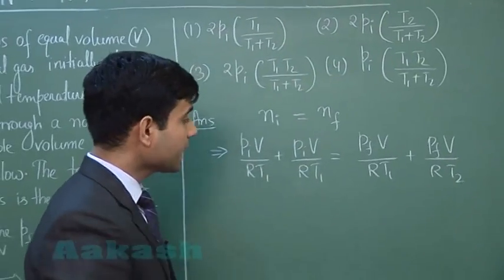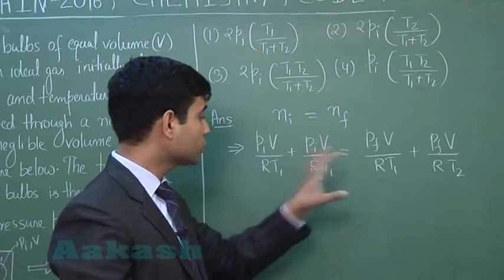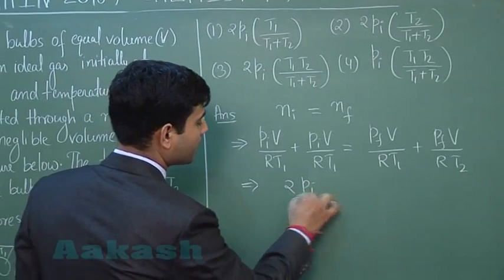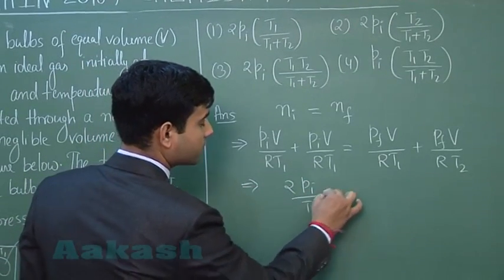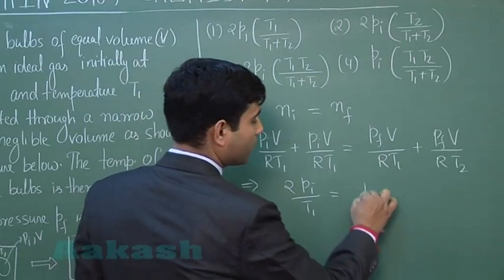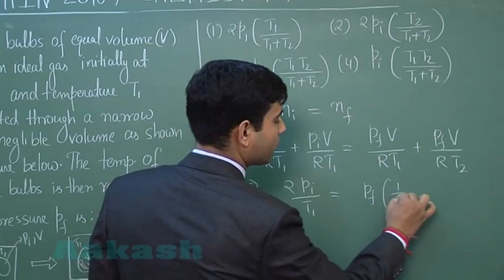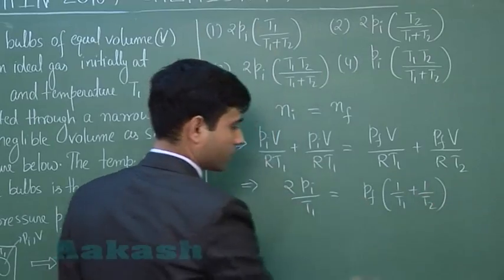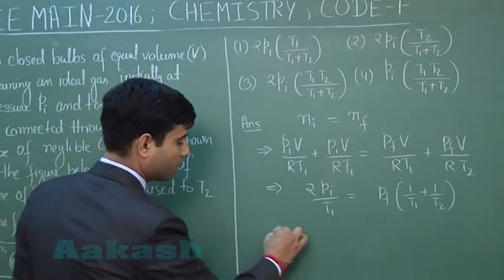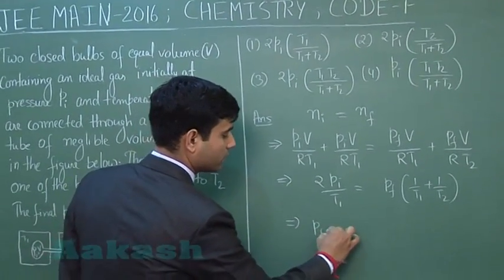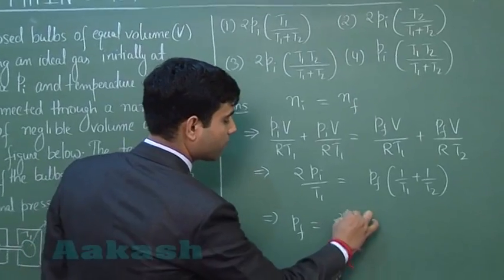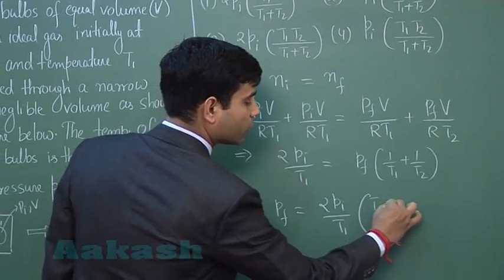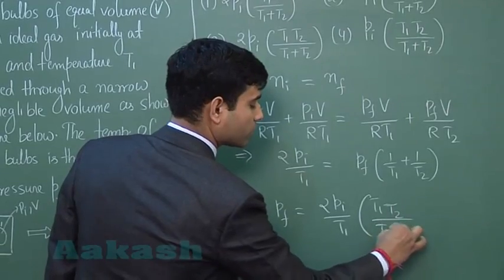We can cancel out V/R from both sides. Setting initial moles equal to final moles: 2·PI/T1 = PF·(1/T1 + 1/T2) = PF·(T1+T2)/(T1·T2). Solving, we get PF = 2·PI·T2/(T1+T2).